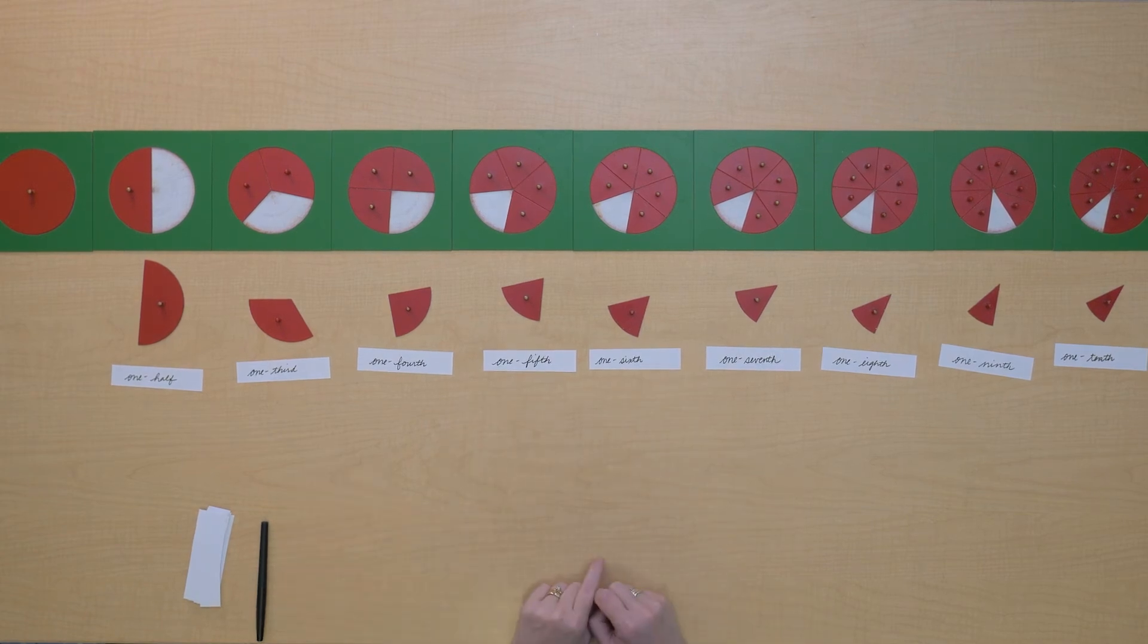So, now you know how to label one piece of each of these fractions and how to name them. One-fifth, one-eighth. Let me show you something more.